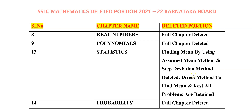After finding Mean by using Direct Method, the rest of the problems are retained. You are going to solve each and every question after that — based on Mode, Median, and Ogive Curve, these all topics are retained and you are going to study them. And the next chapter is Probability — this full chapter is deleted.